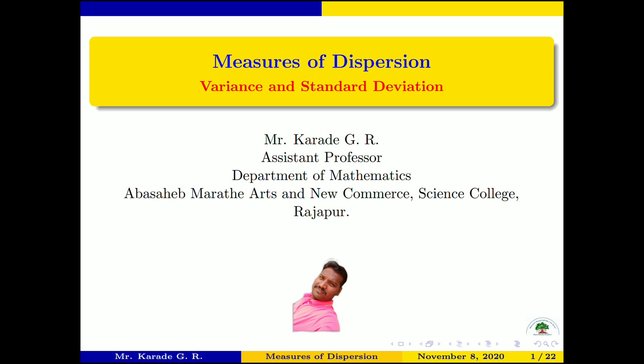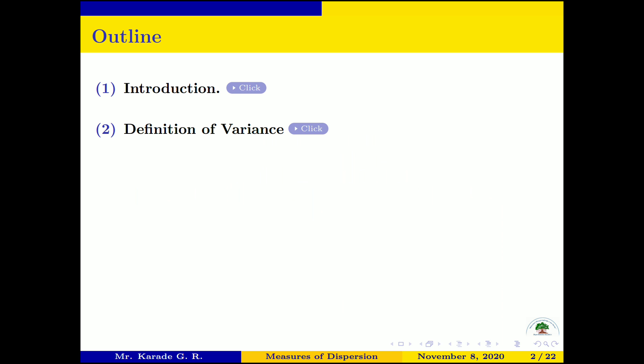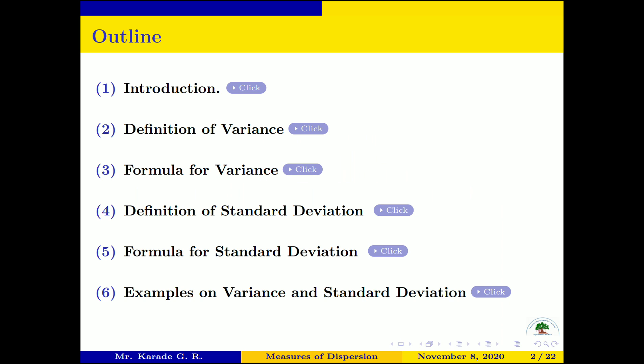Hello and welcome to all students. In this lecture we learn about a new major of dispersion called variance and standard deviation. The outline of our lecture: first we see the introduction, then we define variance, write the formula for variance, then the definition and formula for standard deviation, and finally we take some examples on variance and standard deviation.